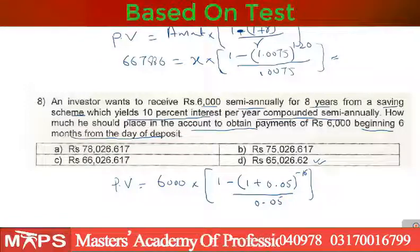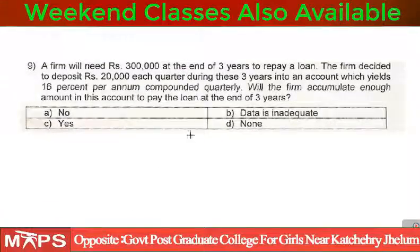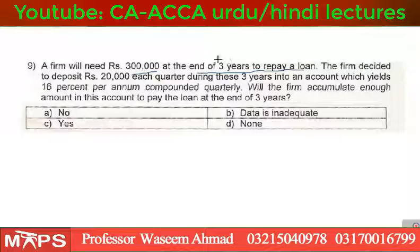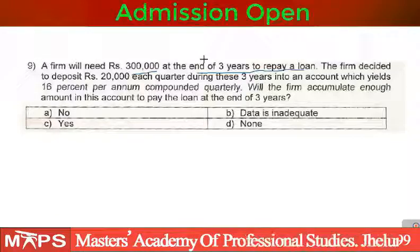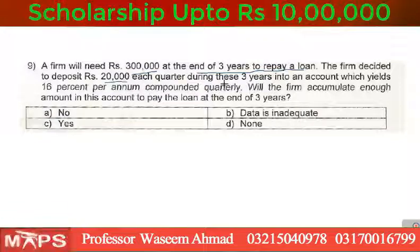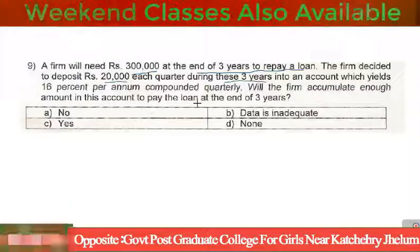Question 9: A firm will need 300,000 at the end of 3 years to repay a loan. The firm decides to deposit 20,000 each quarter during these 3 years. This 300,000 is a future value. The 20,000 quarterly deposits are multiple amounts, so the future value of those multiple amounts is 300,000.